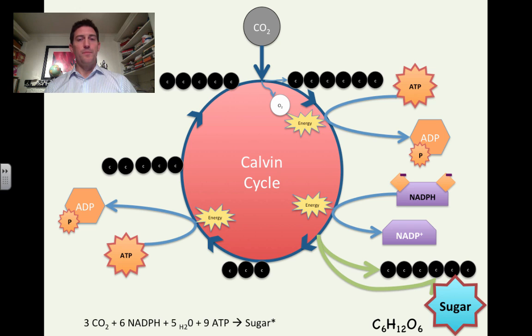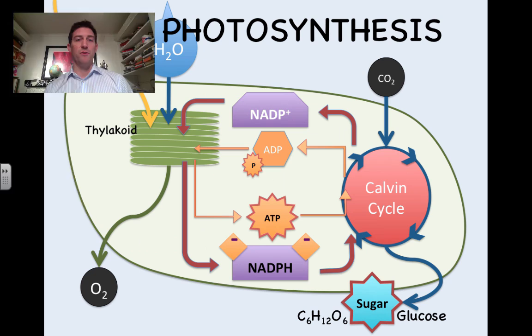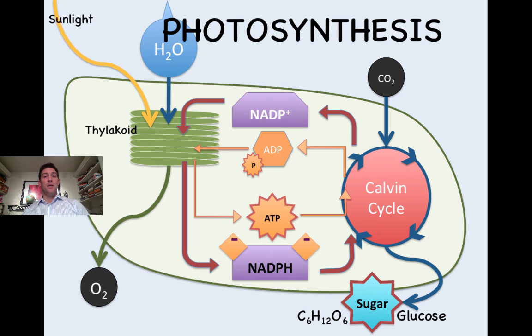Now if you go back to the overview of photosynthesis, you know that a plant actually takes that sugar and converts it into a number of other things. Here's the overview. We got to that last step down there at the bottom making glucose.